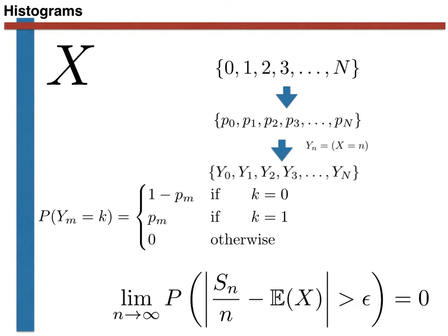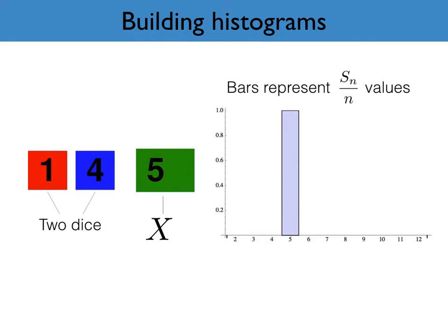We simply perform the experiment multiple times and accumulate a sum for each of the auxiliary random variables, the ym's. When we divide these sums by the total number of experiments performed, we get our estimate for the probability mass function. This process perhaps seems rather involved when explained algebraically, but it is rather easier to understand — and perhaps even familiar — if we instead look at what is going on pictorially.